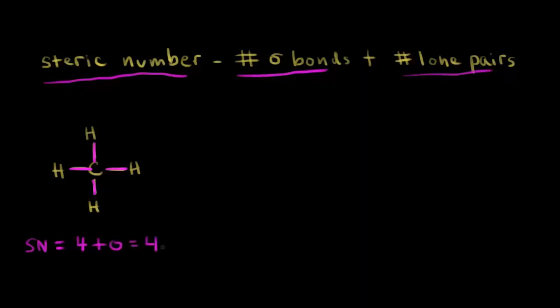In the last video, we saw that in an sp3 hybridized situation we get four hybrid orbitals, and that's how many we need. The steric number tells us we need four hybridized orbitals. So we took one s orbital and three p orbitals, and that gave us four sp3 hybrid orbitals. So this carbon must be sp3 hybridized.